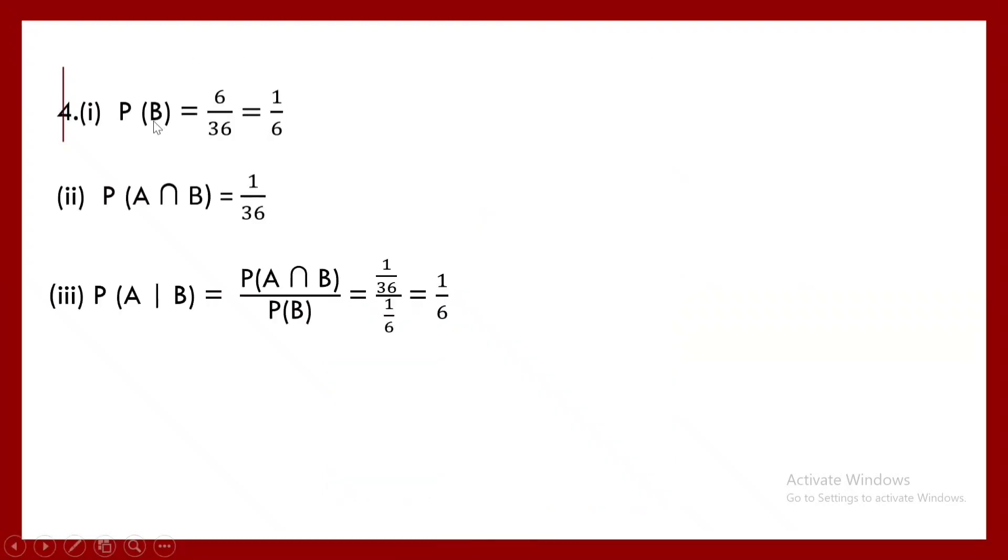P(B) is how much? 6 out of 36, that is 1 by 6. Probability of getting A intersection B, that means the sum of the numbers in both the die is 10 and it is a doublet also, that is 1 upon 36. The conditional probability is what? It is P of A intersection B upon P of B, so 1 by 36 upon 1 by 6, which comes out to be 1 by 6. So this is all as a demonstration.